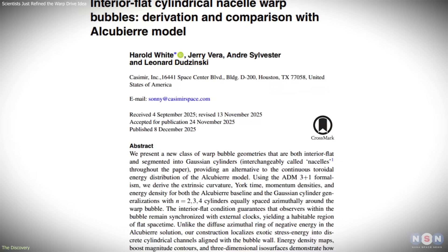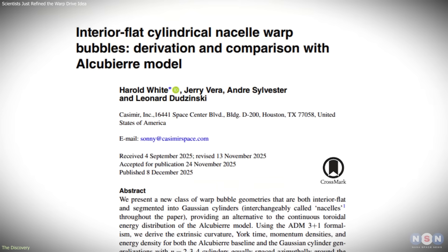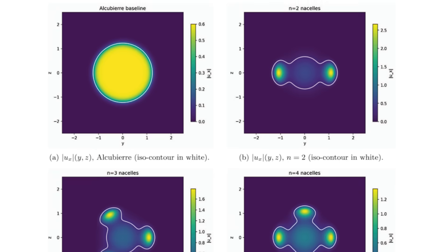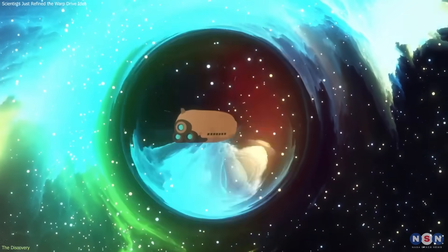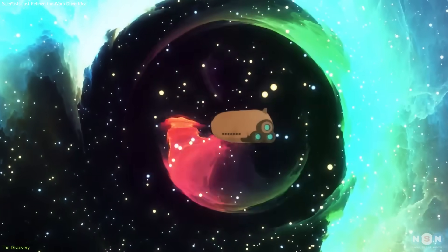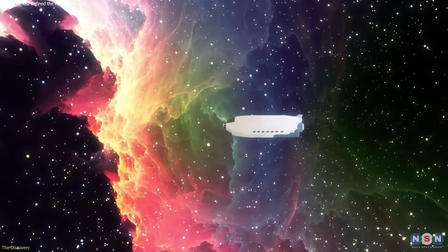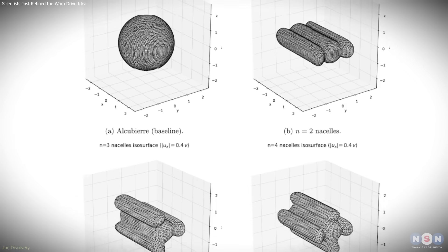The central contribution of the study is not a workable engine design, but a demonstration that warp metrics are more flexible than previously assumed. Within general relativity, there is more than one way to shape spacetime for warp-like motion. That flexibility is the discovery.